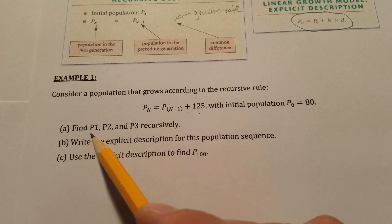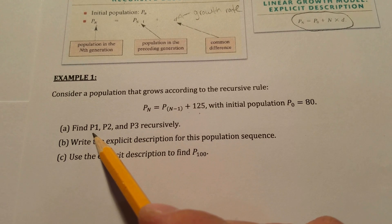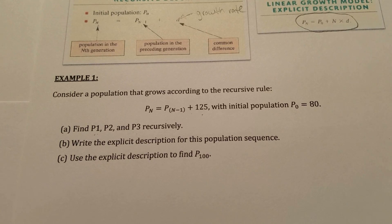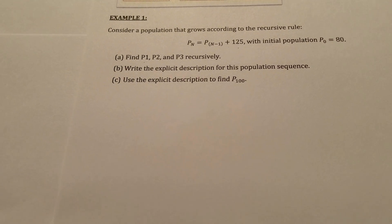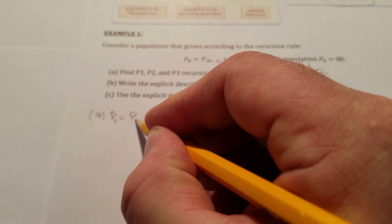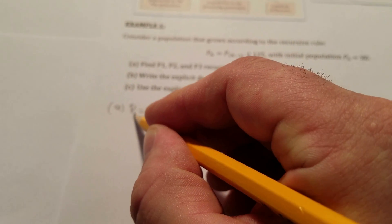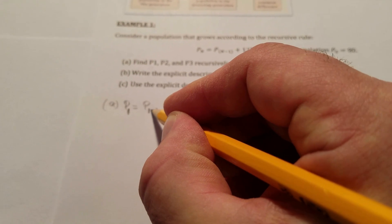Part A says to find populations of generations one, two, and three recursively. So let's do that now. Population of generation one will be population of one minus one. We're taking the generation we're finding and subtracting one from it.